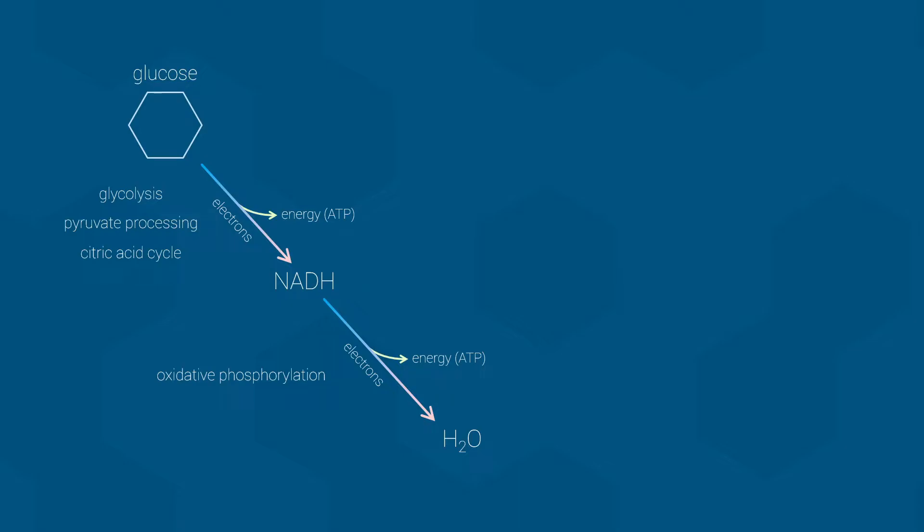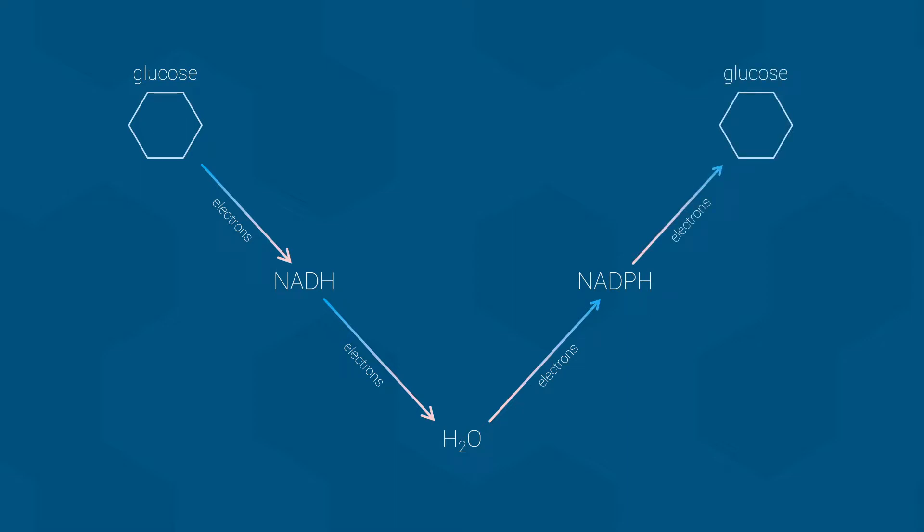Well, the obvious answer would be to simply reverse all of these processes, and to a certain degree that is what happens. Sort of. Electrons are removed from water and transferred to electron carriers such as NADPH. These electron carriers then provide the electrons necessary to reduce carbon dioxide into glucose. In this sense, the process is indeed running backwards. Also, since energy is released by breaking down glucose, making glucose requires the input of energy.